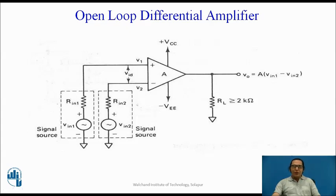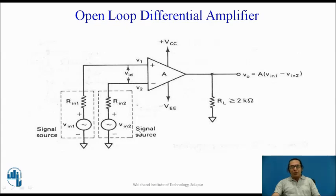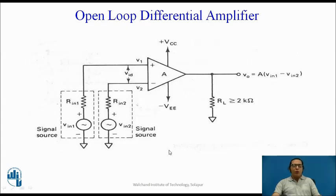The last circuit to discuss is called a differential amplifier. Unlike the previous circuits where one terminal was connected to ground, in this configuration the input is applied to both the inverting and non-inverting terminals. This particular configuration of open-loop op-amp is called a differential amplifier. To draw the output, we again apply the golden rules: if the non-inverting input is greater, output is +Vsat; if the inverting input is greater, output is −Vsat. The output will be a square wave depending on the voltage levels applied.